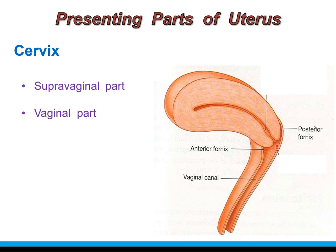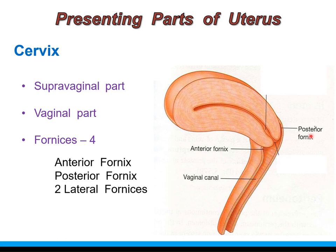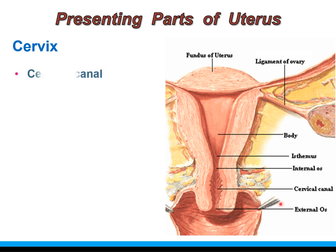The portion of the vaginal canal surrounding the vaginal part of the cervix is known as the vaginal fornices, which are four in number: anterior fornix, posterior fornix, and two lateral fornices. The cavity of the cervix, known as the cervical canal, communicates above with the cavity of the body and below with the vaginal canal through two narrow openings called the internal os above and the external os below.